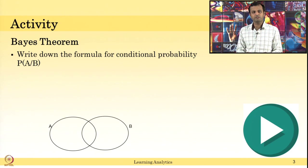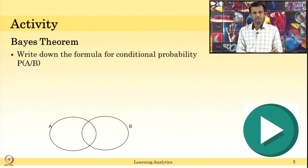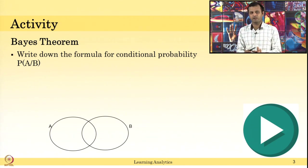Let us start with an activity before we jump into what is Naive Bayes theorem. Let us see what is conditional probability, just to brush up your memory. There are two dependent events A and B. If two events are dependent, given this kind of diagram, what is the probability of A given B — that is, the probability of A occurring given B already occurred?